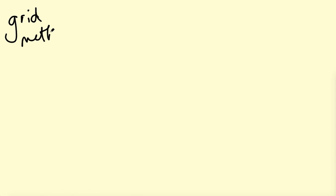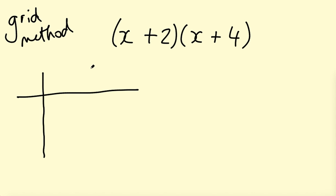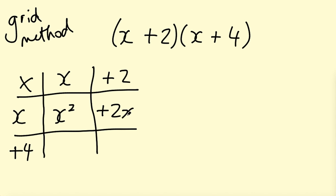The second method is the grid method. Let's use (X plus 2)(X plus 4). The grid method is similar to grid multiplication — you draw a grid, and because we've got 2 terms times 2 terms we'll have a 2-by-2 grid. Put a times symbol in the corner, then the first bracket along the top — X and plus 2 — and the second bracket down the side — X and plus 4 — always including the sign. Now multiply: X times X gives X squared, plus 2 times X gives 2X, X times 4 gives 4X, and plus 2 times plus 4 gives plus 8.